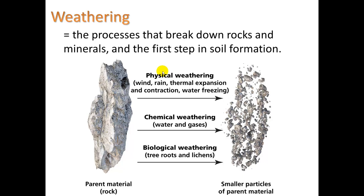Weathering is the process that breaks down rocks and minerals — the first step in soil formation. There are three ways this can happen. First, physical weathering, occurring by wind, rain, thermal expansion and contraction, and water freezing. A little water gets into a pore in a rock and freezes, expanding and breaking the rock apart. Because ice is less dense, it takes up greater volume, and that can be a very strong force to break apart rock. Without that process, we might not have the soil we have today or life as we know it.